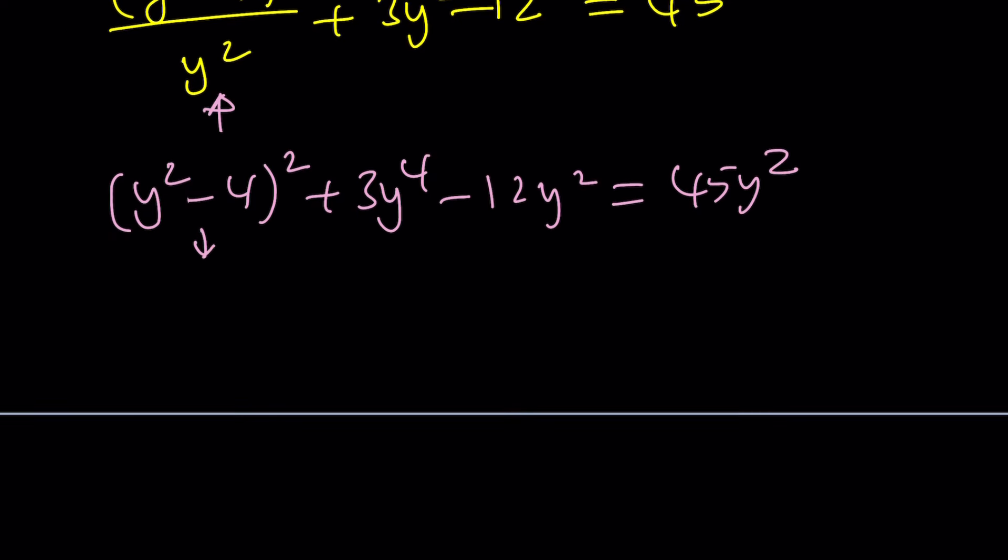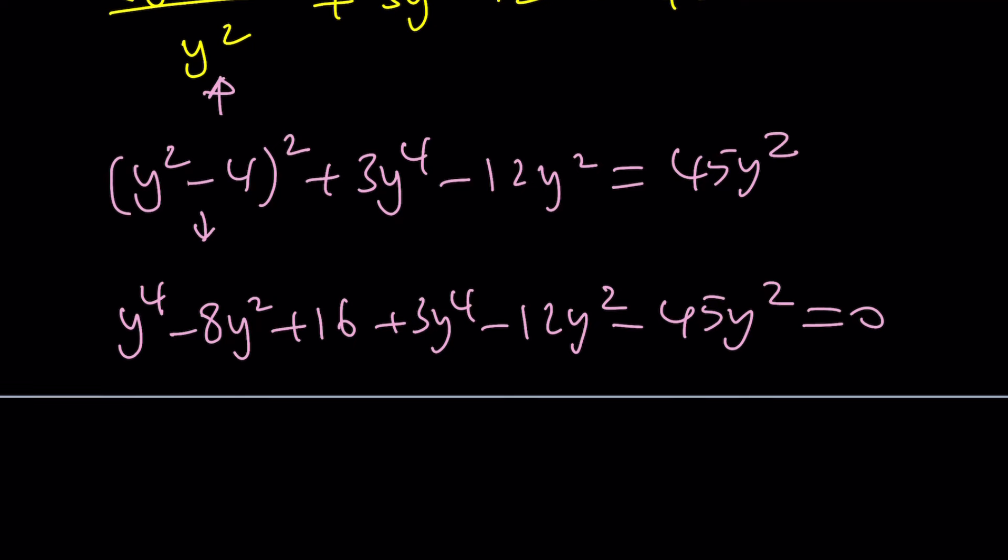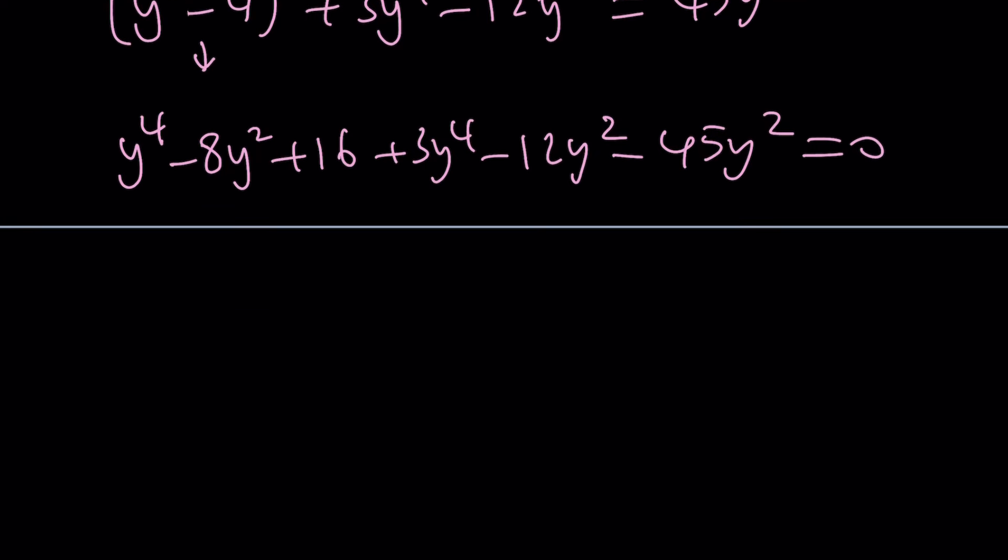And now let's go ahead and expand this. y to the fourth minus 8y squared plus 16 plus 3y to the fourth minus 12y squared minus 45y squared equals 0. I set everything equal to 0. And now we can go ahead and combine like terms. We have 4y to the fourth minus 8 minus 12 is going to give us minus 20 minus 65y squared and then plus 16 is just going to be our constant.